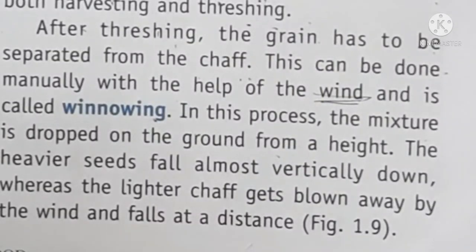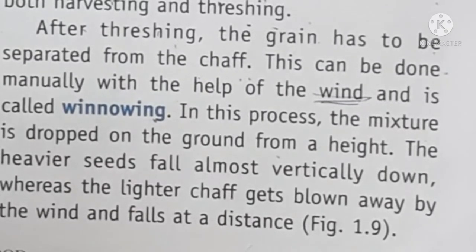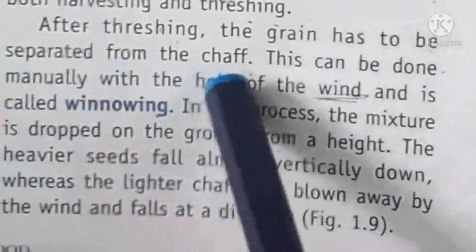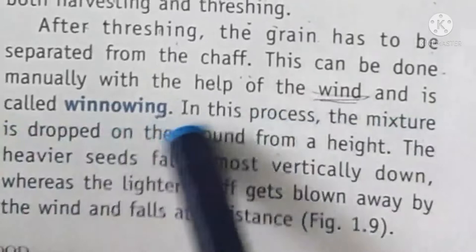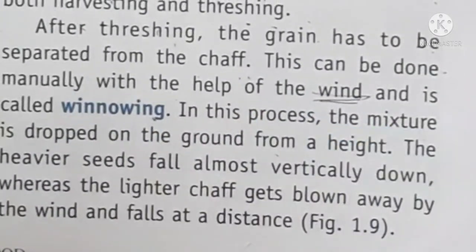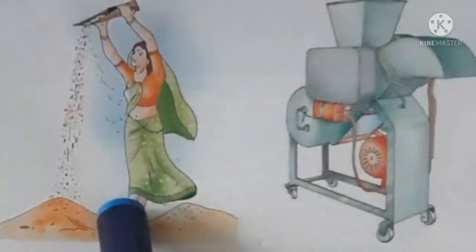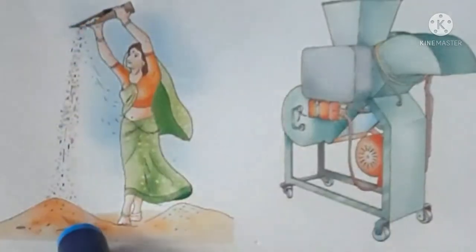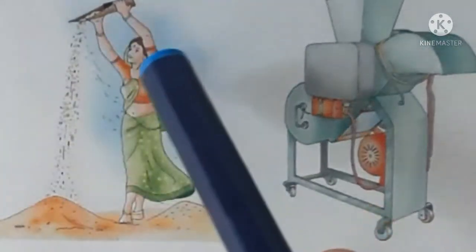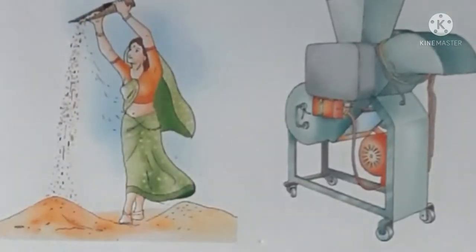After threshing, the grain is mixed with the broken stem covering called chaff, or 'bhoosa.' To separate the grain from the chaff, we use wind in a process called winnowing. In this process, the mixture of chaff and grain is dropped from above. When the wind is blowing, the lighter chaff flies away to another place while the heavier grain falls straight down, separating the grain from the chaff.